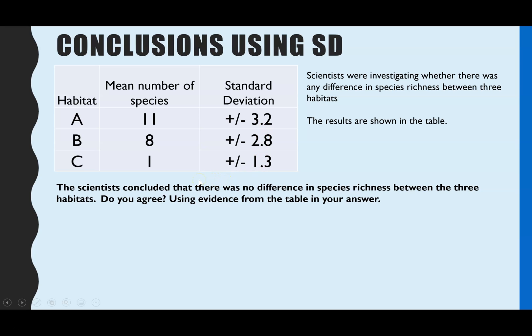And the way to use it is you need to plus and minus that standard deviation onto your mean to see what is the highest and the lowest variation there was compared to the mean. So if you visualize this as a bar chart, the bar would be going up to 11, but you'd have a standard deviation error bar style on top, which went up to 14.2 and went down to 7.8. So we then need to do this for habitat B and C. So 8 plus 2.8 goes up to 10.2 minus 2.8, we go down to 5.2. And then the same for one, if we add on 1.3, we have 2.3, but it goes as low as minus 0.3.